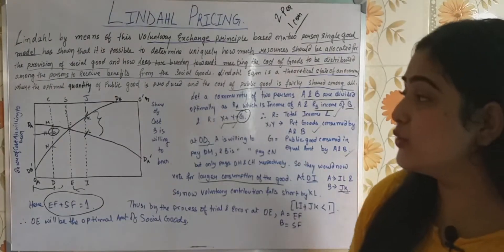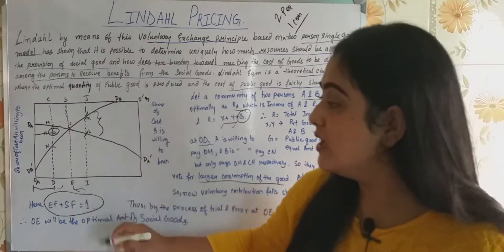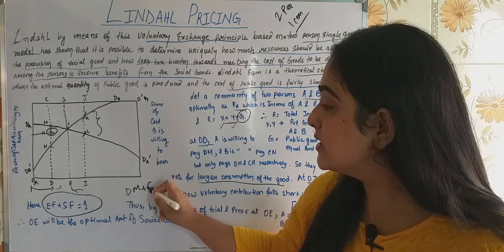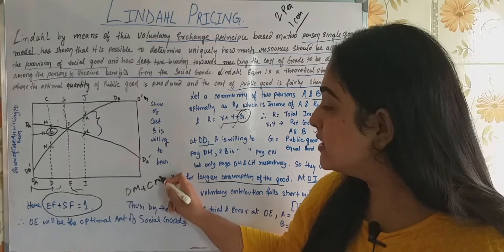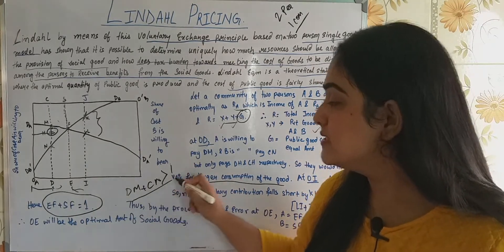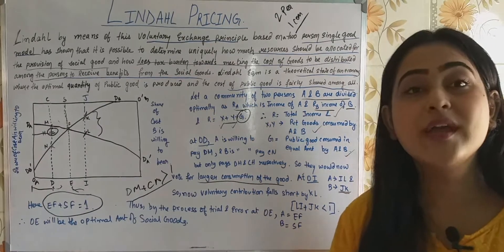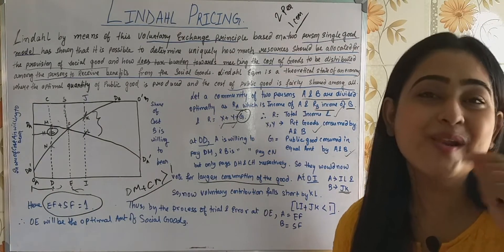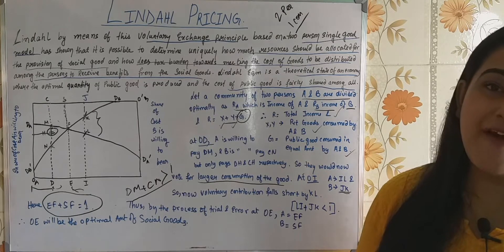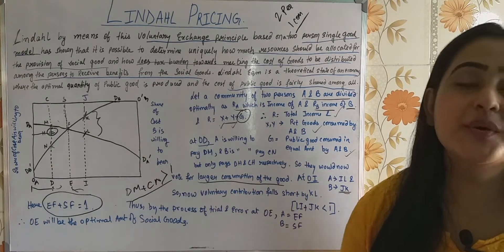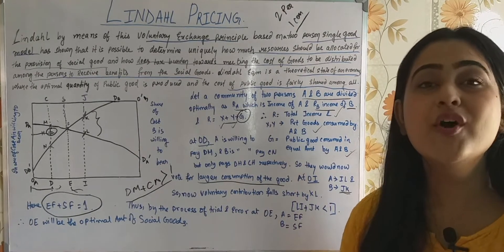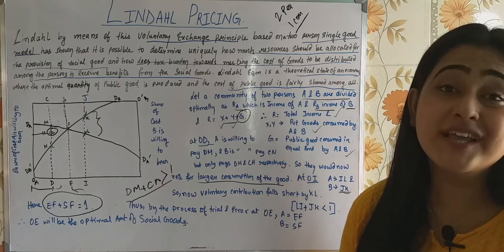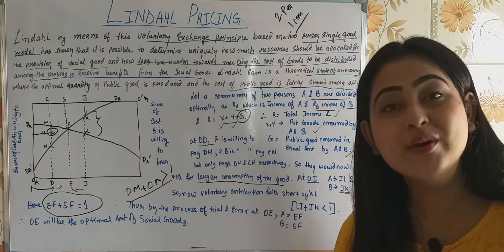The total willingness to pay — DM plus CN — is greater than the cost. The willingness to pay for the commodity is much more than what they actually have to pay. That means the individuals can afford more of the quantity, so the government can supply more of the commodity in the market.